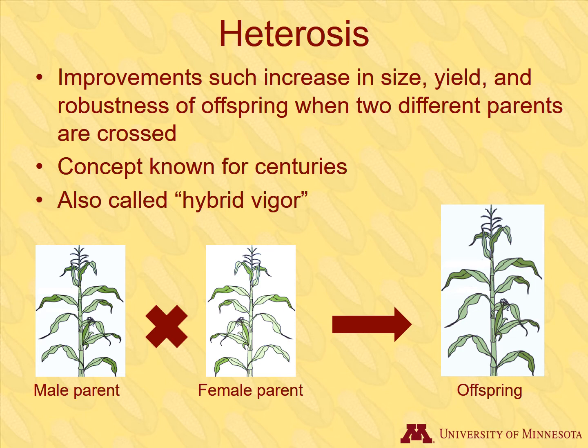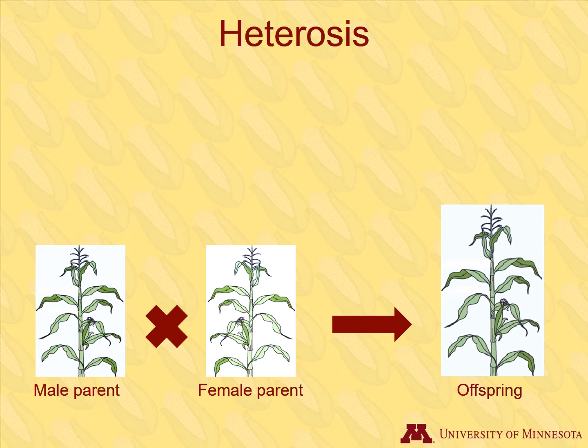Another term for heterosis is hybrid vigor. The plant that is the pollen donor is designated as male, and the plant that has its egg pollinated and produces the seed is the female plant. Corn has both male and female parts, so whether a plant functions as the male or female is determined by the breeder.